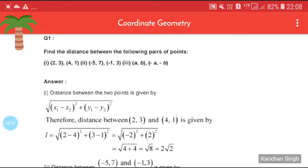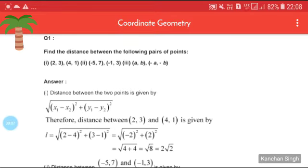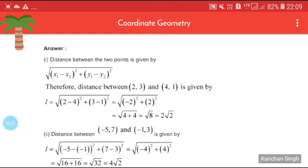Our first question: find the distance between the following pairs of points. We have to find the distance between the points (2, 3) and (4, 1). Here x1, y1, x2, y2 are given. We use the distance formula: d = √((x2 - x1)² + (y2 - y1)²).